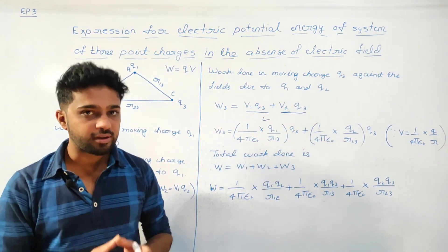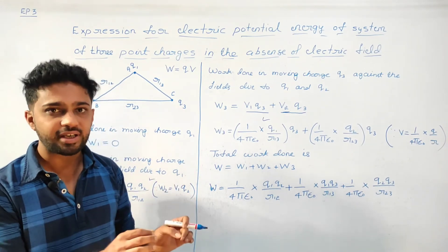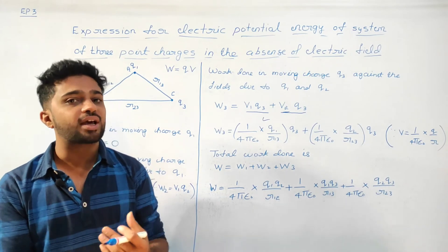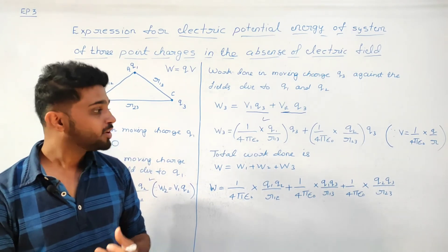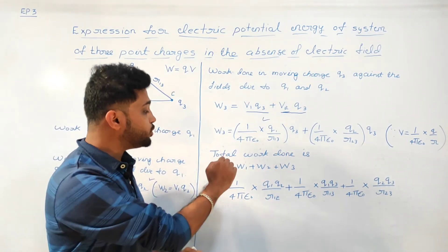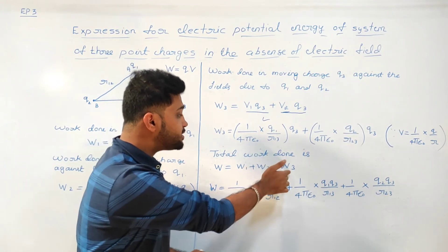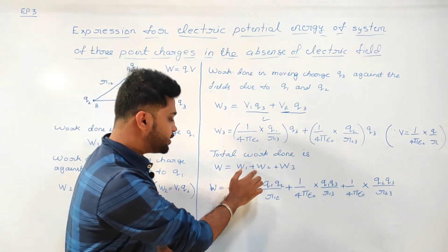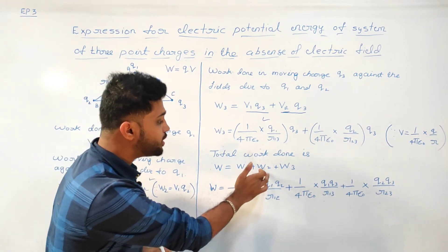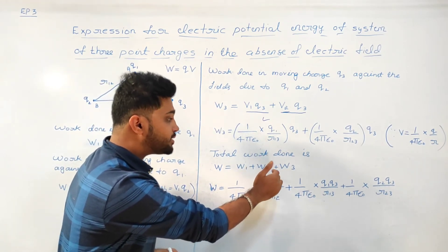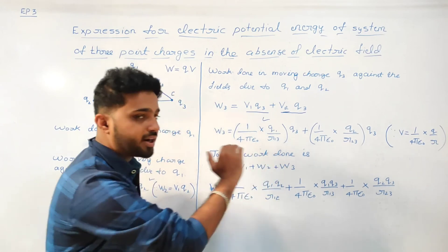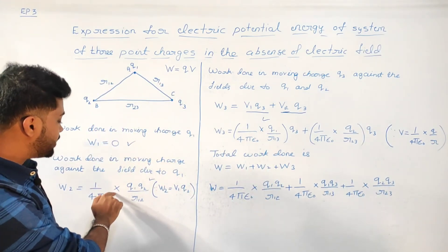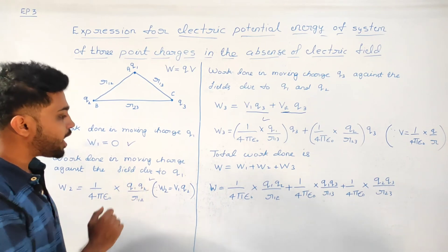We are now calculating total work done. Total work done, which equals electrostatic potential energy U, is equal to W1 plus W2 plus W3. W2 equals 1 upon 4 pi epsilon naught into Q1 Q2 divided by R12.